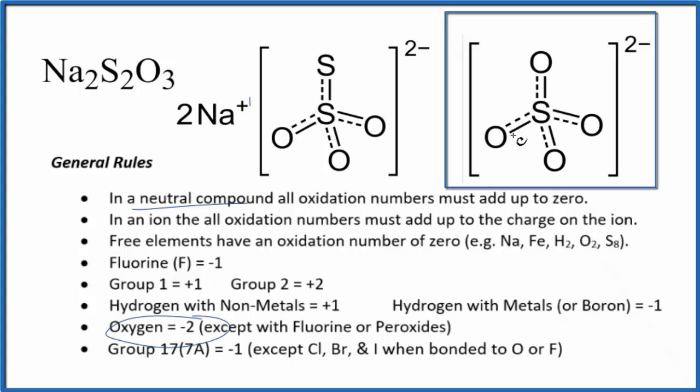We know that oxygen is going to be minus two, each one of the oxygen atoms. And that we have a two minus ionic charge on the sulfate ion. When you have an ion, all the oxidation numbers add up to the charge on the ion. So all of this has to add up to two minus. The only way that's going to happen is if the sulfur is plus six. Plus six and minus eight gives us this two minus ionic charge.